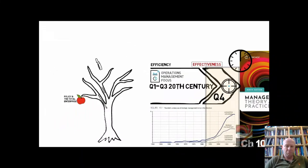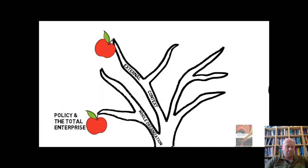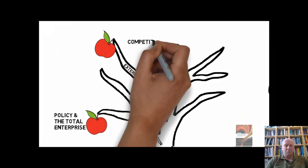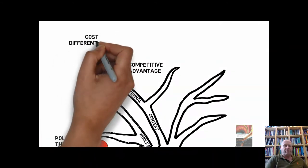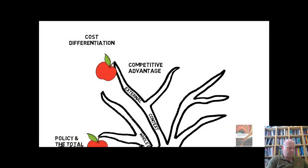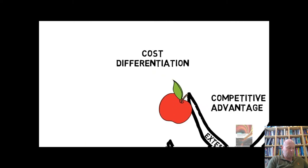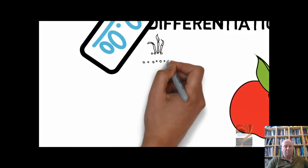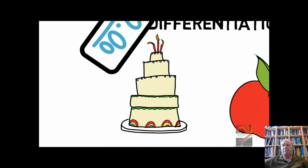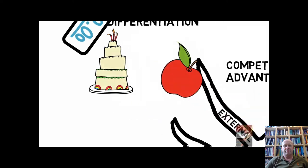At first, strategies focused on challenges from the external environment and recognized the need to compete — thus competitive advantage featured heavily in the strategy literature. Various generic sources of advantage such as cost and differentiation were considered. The cost advantage built on much earlier managerial work about efficiency, allowing an organization to either increase its profit margin or pass on benefits to customers through a reduction in price. Differentiation advantages involved offering more: improved service, additional features or functions, making the customer see your product as different and more aligned with their needs — ultimately about increasing value.